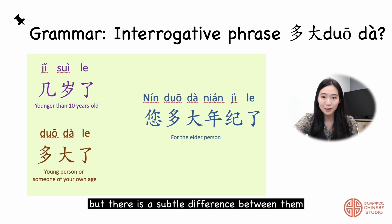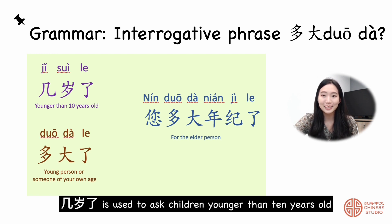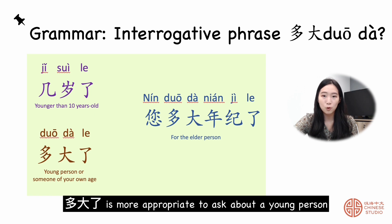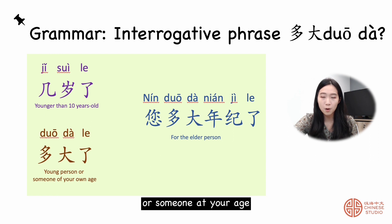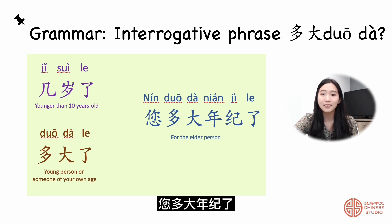But there is a subtle difference between them. 几岁了 is used to ask children younger than 10 years old. 多大了 is more appropriate to ask about a young person or someone your own age. For elder people, especially the grandparents' generation, we use 您多大年纪了.